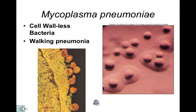Mycoplasma pneumoniae is a very unusual type of bacteria with a structure we call cell wall-less. Most bacteria do have an envelope surrounding the cell structure called a bacterial cell wall, but mycoplasma doesn't — yet its fundamental cell structure is still considered to be prokaryotic. This organism actually causes walking pneumonia, a very common type of respiratory illness especially among college-age students.